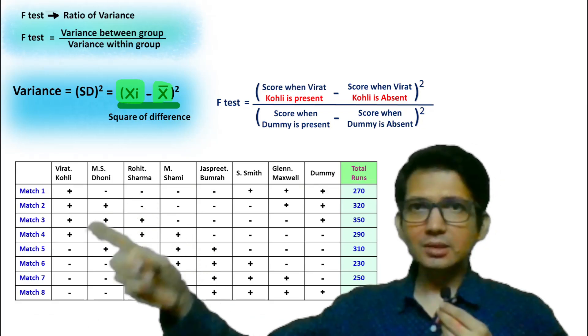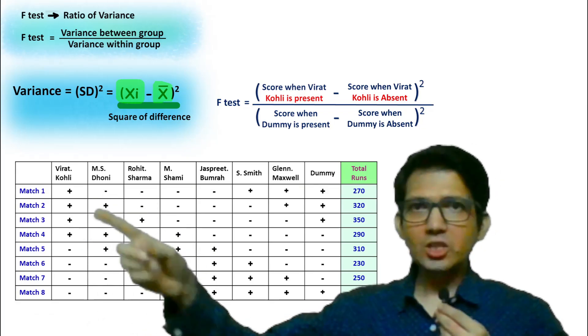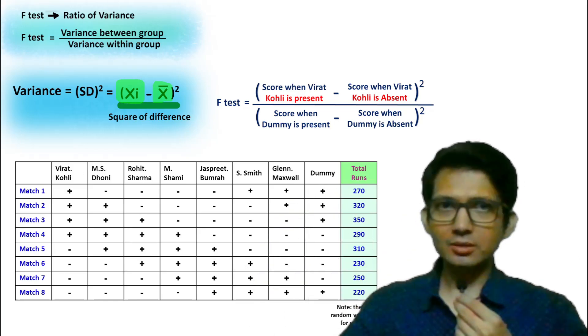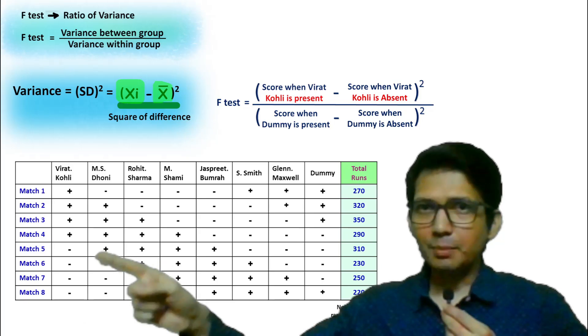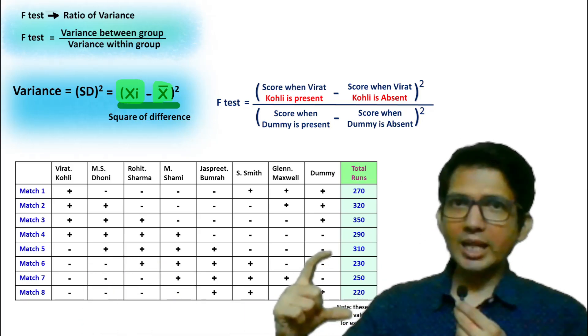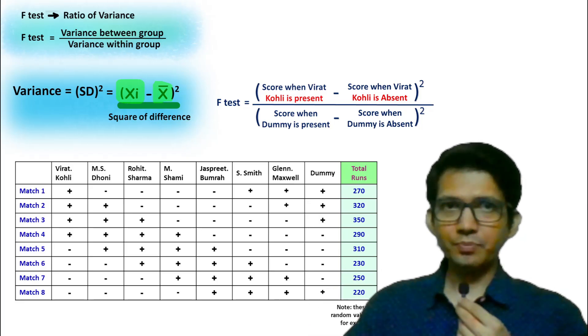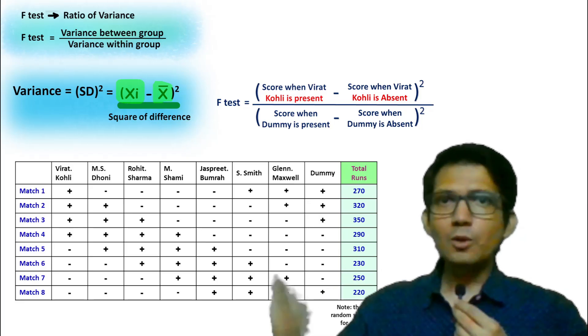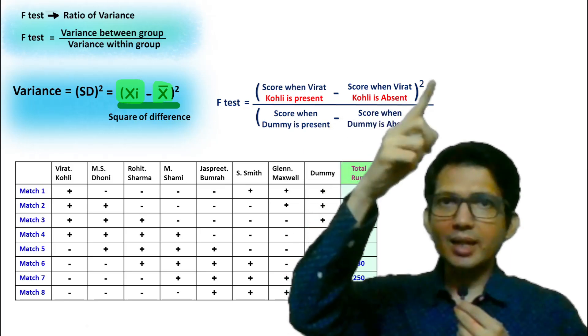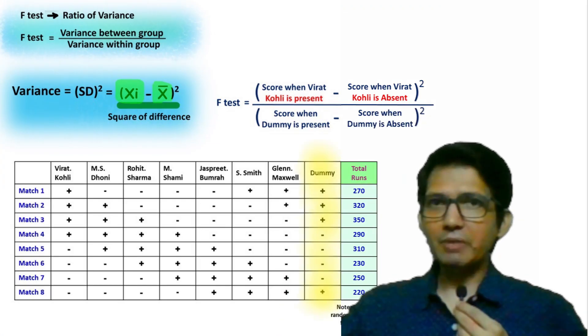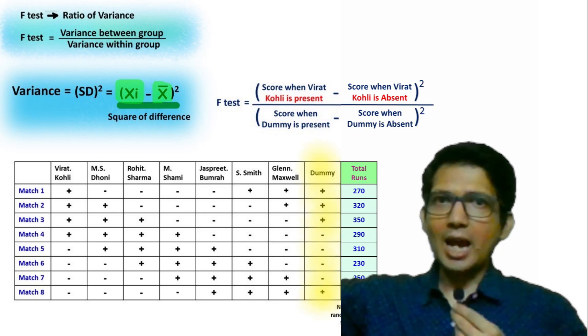When a player is present, we check the total score and get this average. Then, when the player is absent, we again check the total score and get this average. Then, we calculate this difference and square it. The same is done with the dummy variable to get the F ratio.